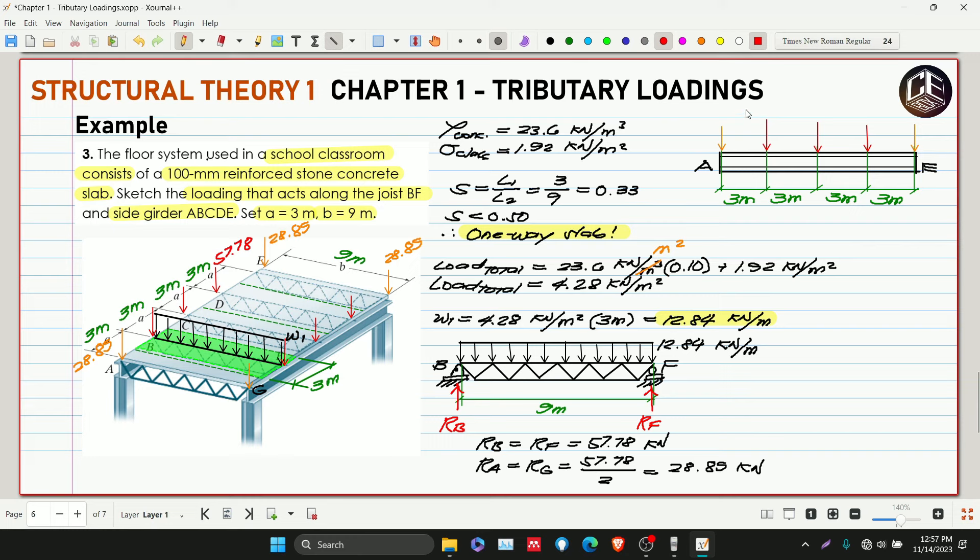This is what the problem is asking for. This is 57.78, 57.78, 57.78, and this is 28.89, 28.89 kilonewtons. These are the answers.